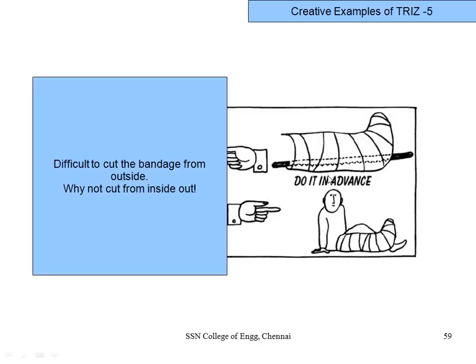Another thumb rule is 'do it in advance.' When removing a gypsum cast, cutting from outside risks cutting the patient's skin. The inventive solution: if you cannot cut from outside, cut from inside — do it the reverse. While applying the bandage, insert a small hacksaw blade inside, then bandage over it. When you want to remove the cast, move the embedded hacksaw to cut it from within. The rule: if you cannot do it later, do it in advance.